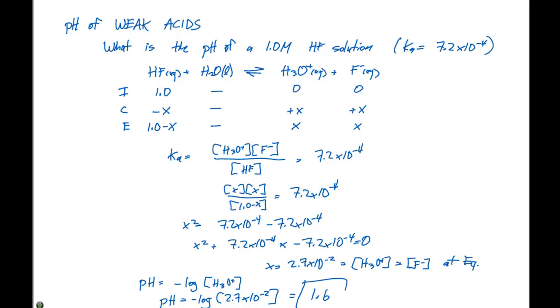So to recap everything here. If we're trying to determine the pH of a weak acid, we set up our equilibrium expression for our weak acid. We're given the Ka being 7.2 times 10 to the minus 4. We set up an ICE table, write out the Ka expression, go through, use the quadratic equation to solve for X.